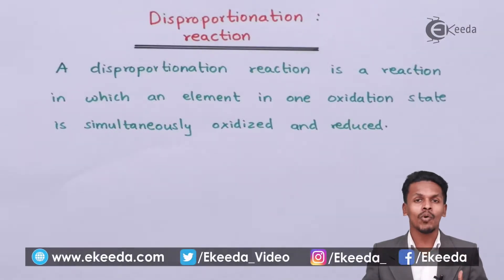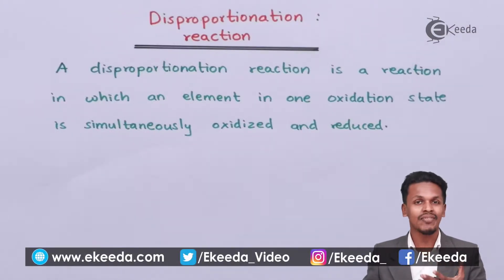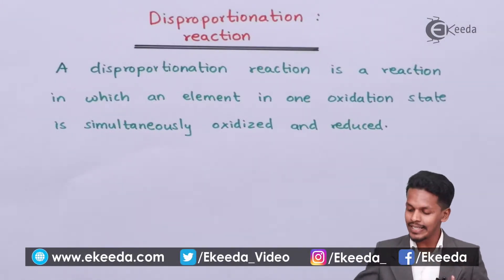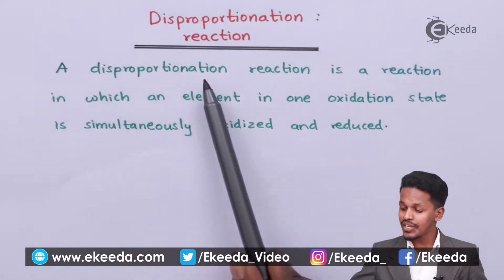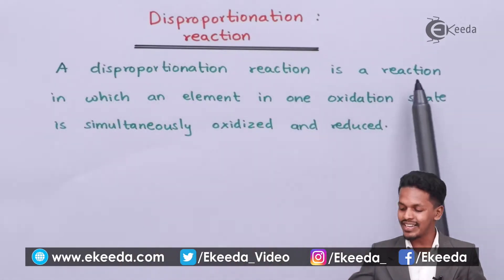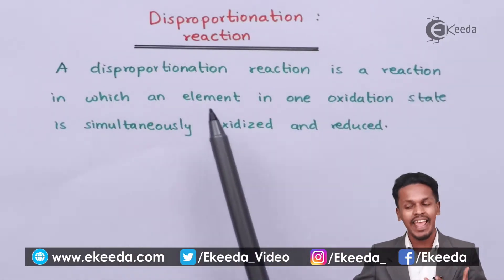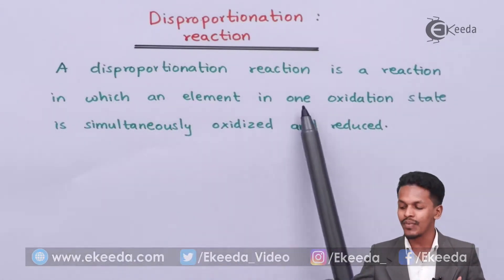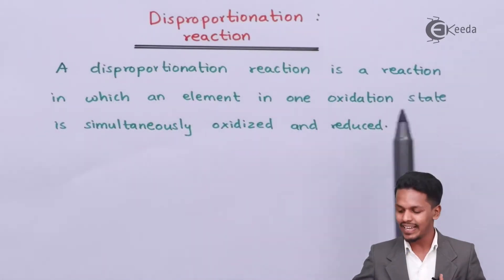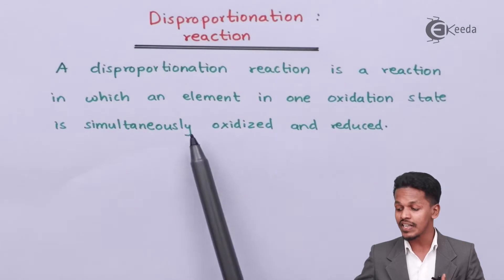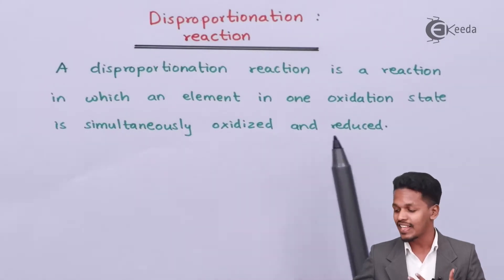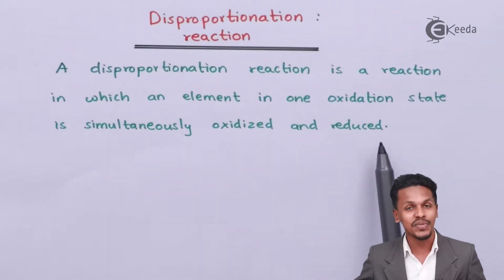So friends, let us understand what is disproportionation reaction. The definition is: a disproportionation reaction is a reaction in which an element in one oxidation state is simultaneously oxidized as well as reduced.